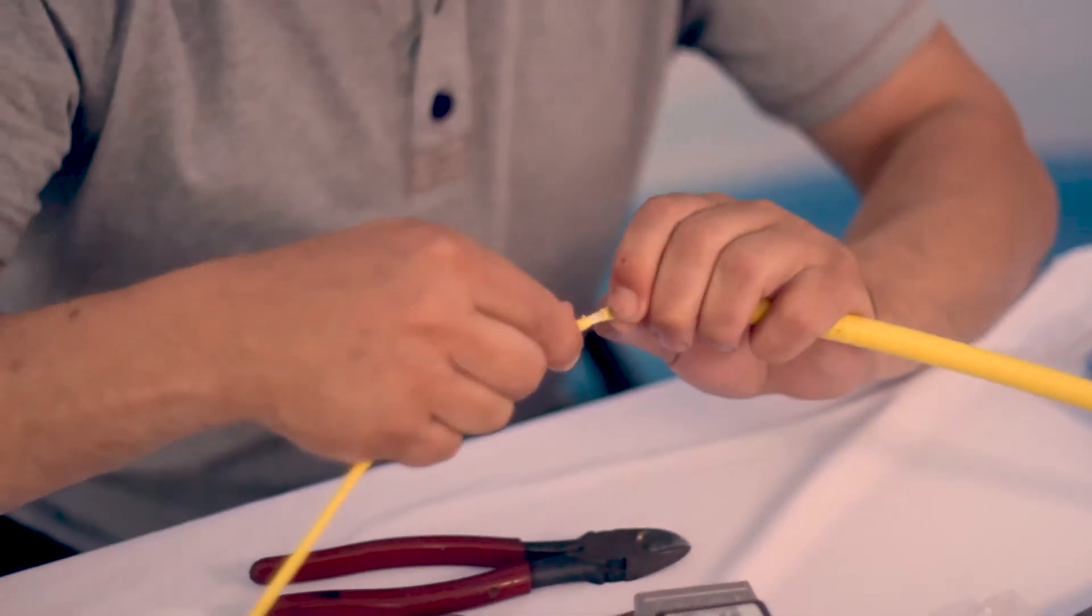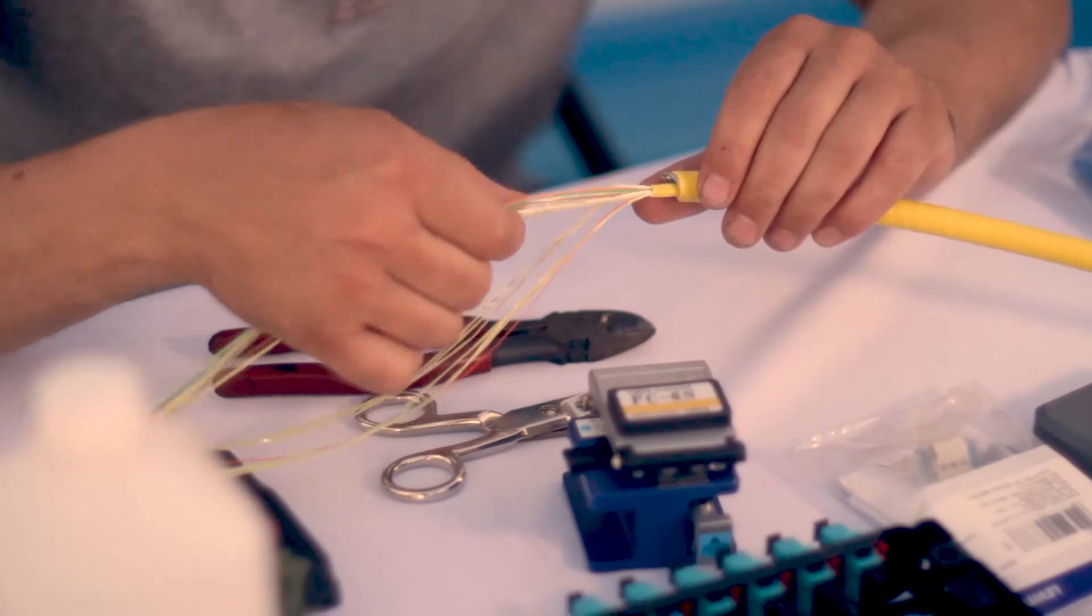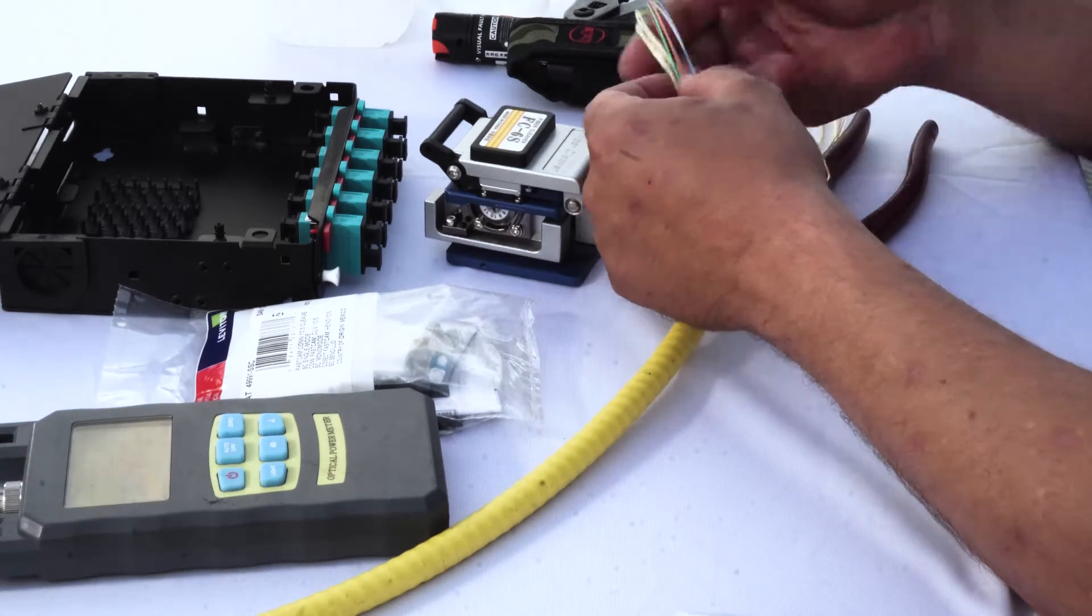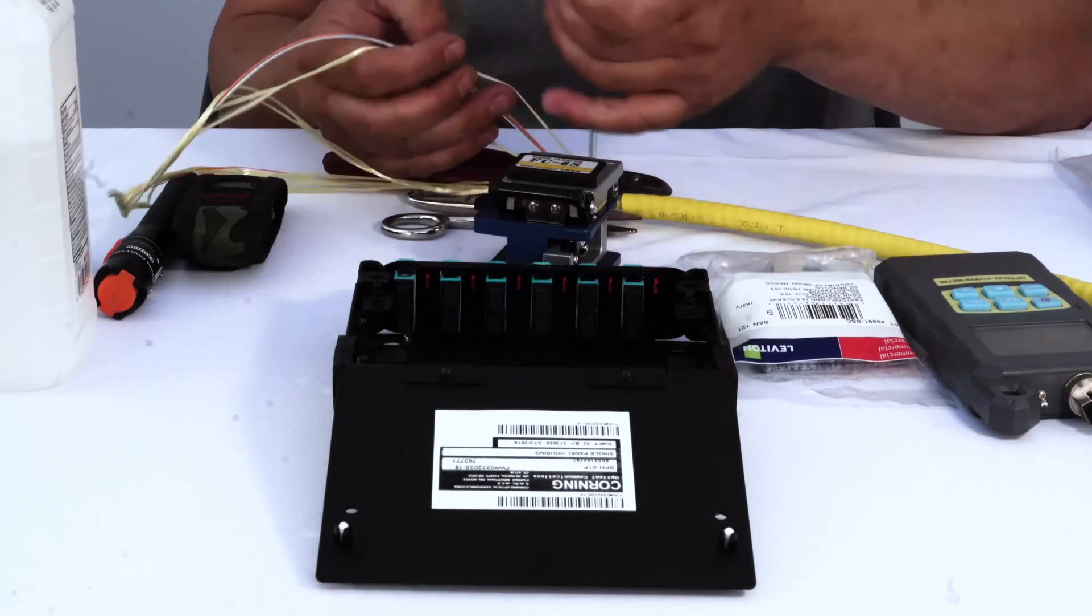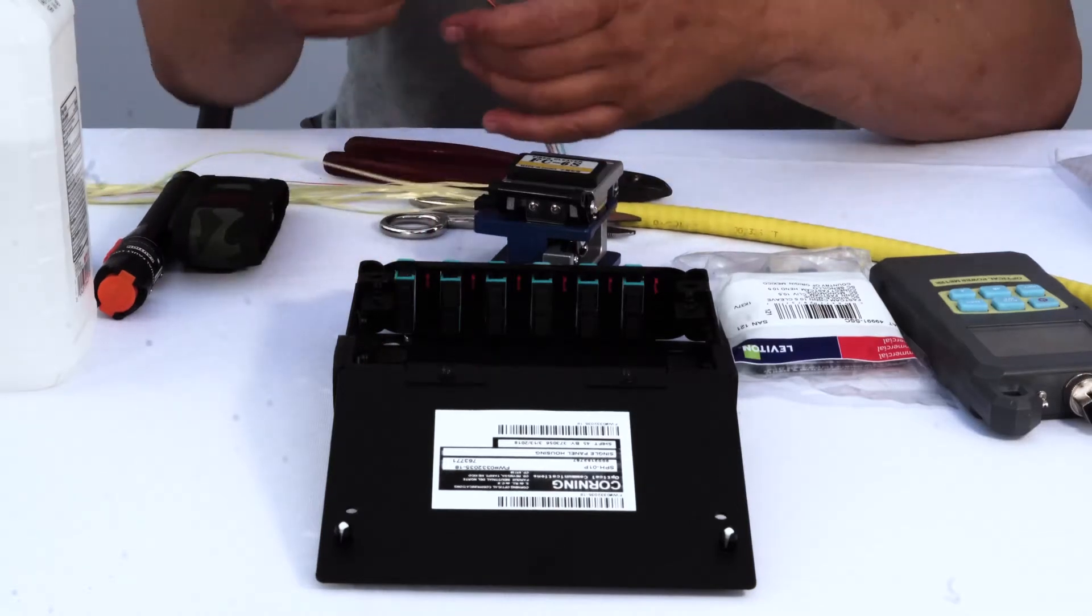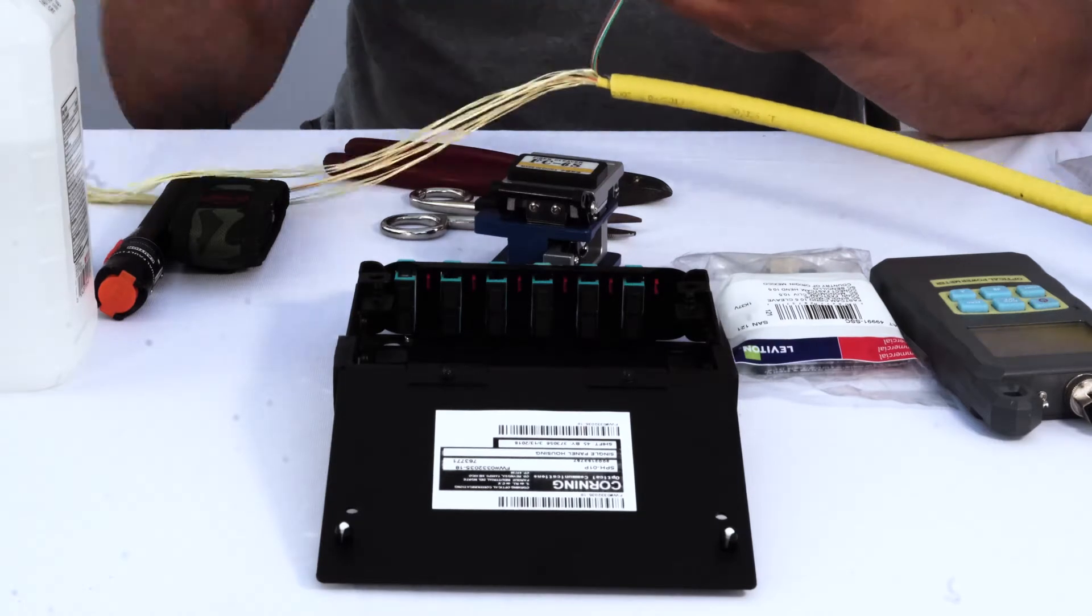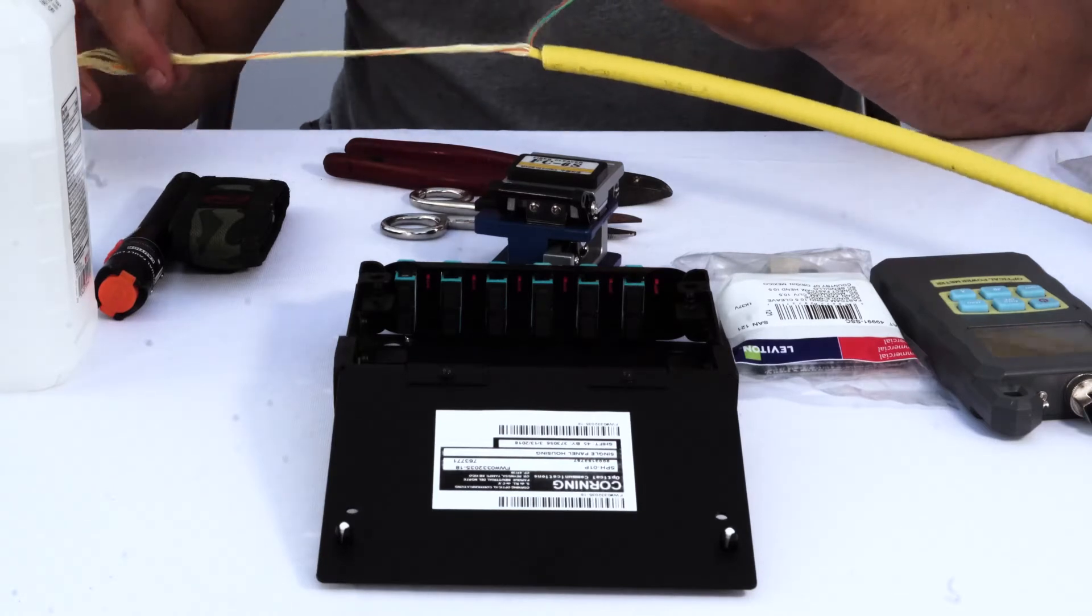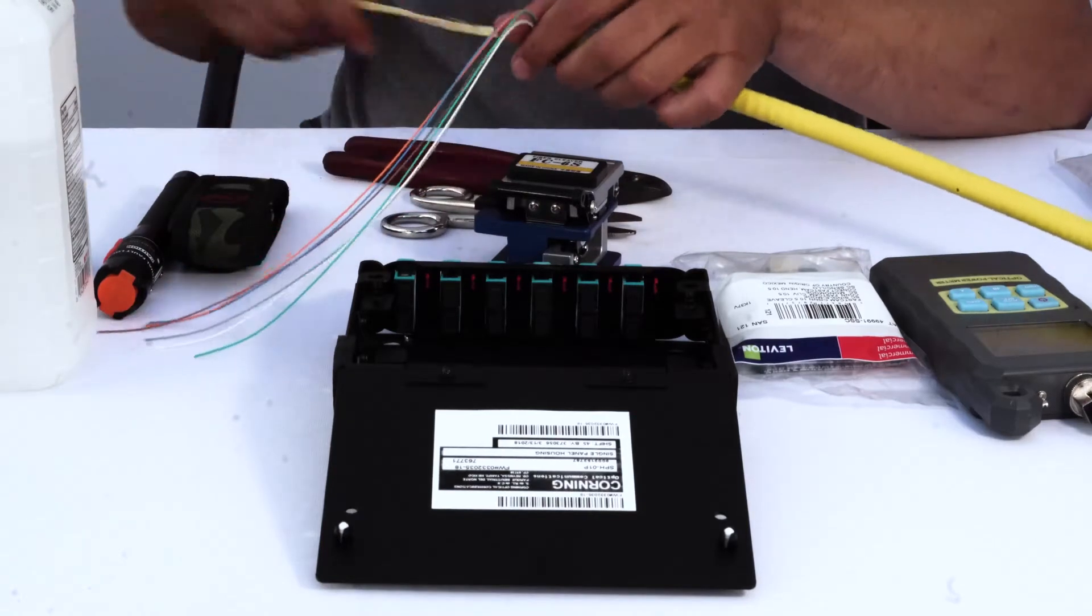There we go. All right, now we're into our pairs. So this is our six strands, we'll go ahead and separate these out. I'm just going to demonstrate on one strand today. So there's our six strands and we have our strength member, which is actually an aramid yarn. Some people call it Kevlar, but yeah, just a strength member in there. For the purpose of this video we'll just set that aside.